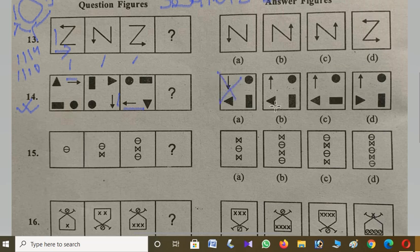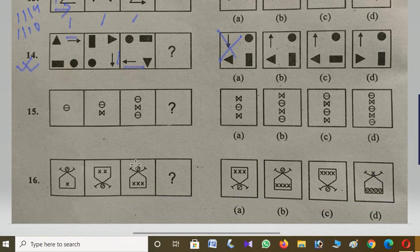If you can find out, comment down the answer in the section. In number 15, you can see the pattern with circles and crosses. Exactly, you can find out and comment down the answer.